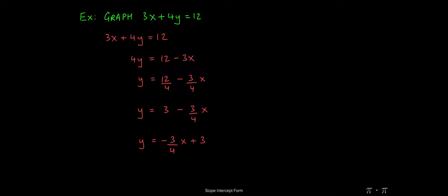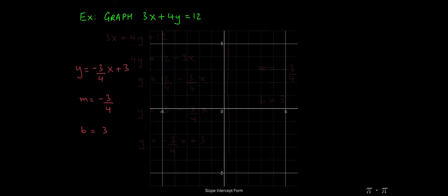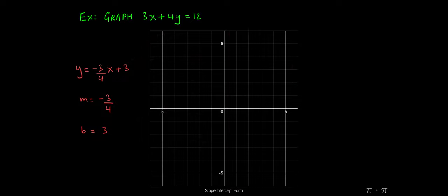The nice part about this form is that it tells us what the slope and the y-intercept for this line are. So the slope comes out to be negative 3 over 4, and the y-intercept turns out to be 3. And we can use this information to our advantage. We can use it to come up with a graph pretty painlessly.